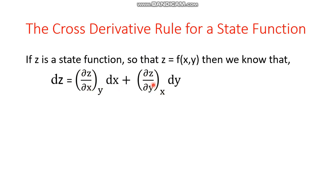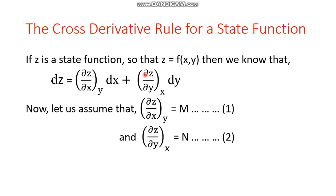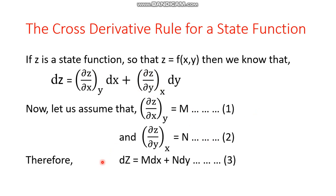These two parameters are assumed to be equal to some variables capital M and capital N. So if we assume like this, we can get equations 1 and 2. Putting M and N in the respective places, we can easily get equation number 3: dz equals M dx plus N dy.